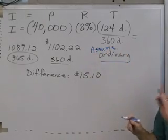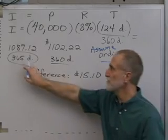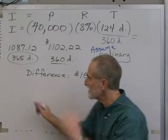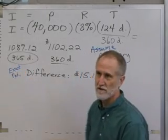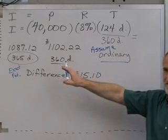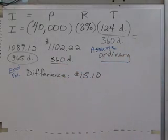Always assume 360 days in a year. The only time we ever use 365 is if it specifically says exact interest or federal bank. It's the only time we ever use 365. So, just always assume 360. And you'll be in good shape.